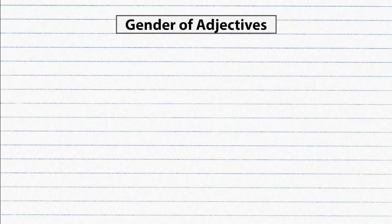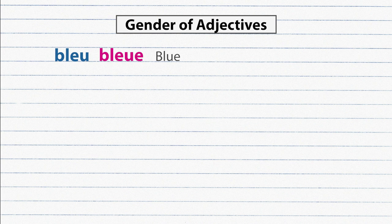The gender of adjectives in French. The adjective must agree with a noun in gender and in number. That means when the noun is masculine the adjective is also masculine and when the noun is feminine the adjective is also feminine. Example: le manteau bleu, la robe bleue.